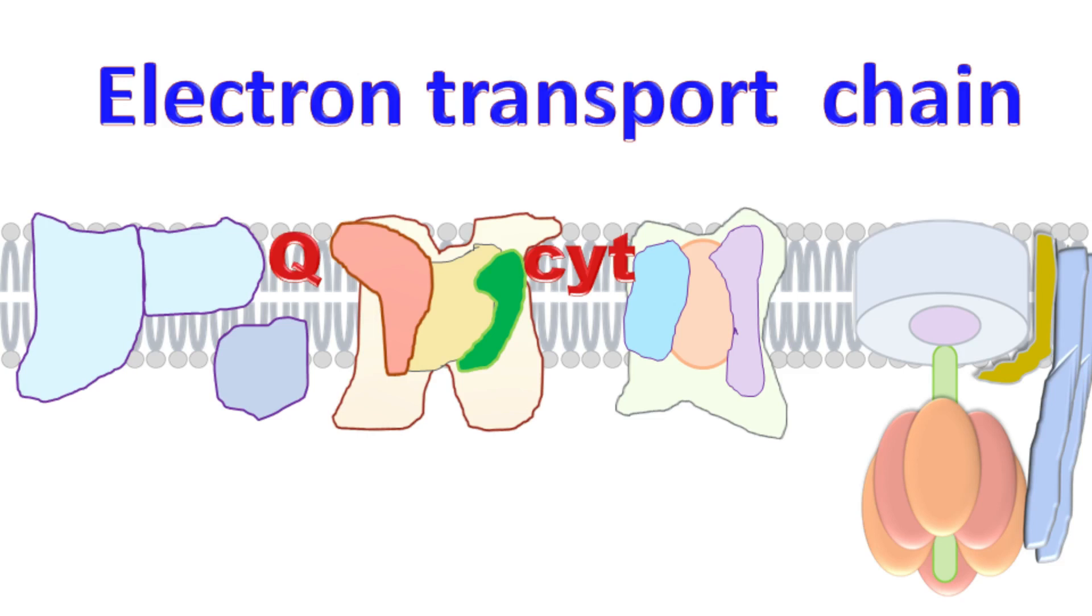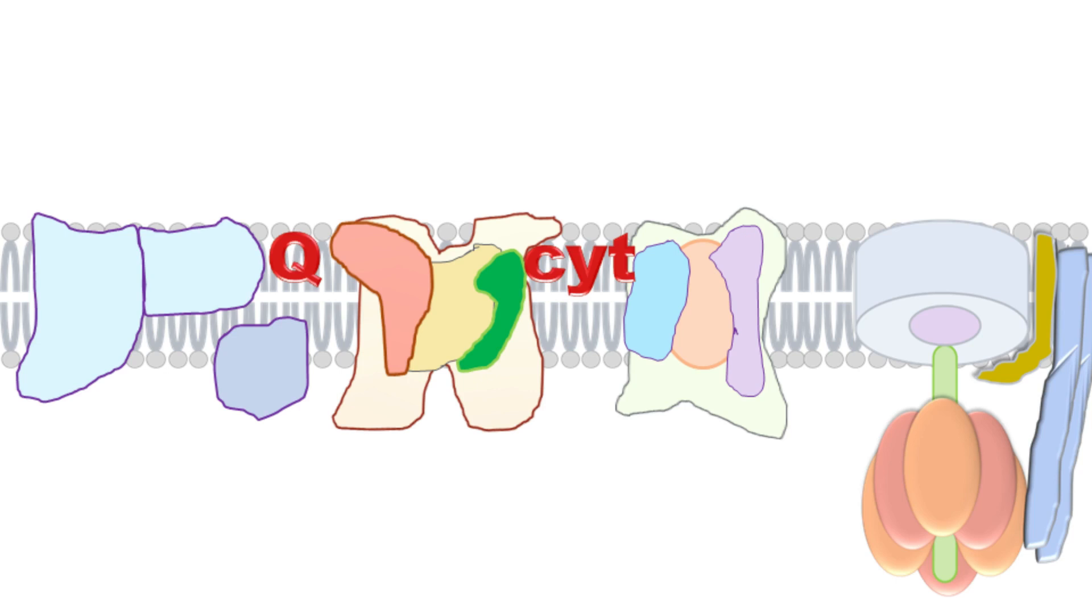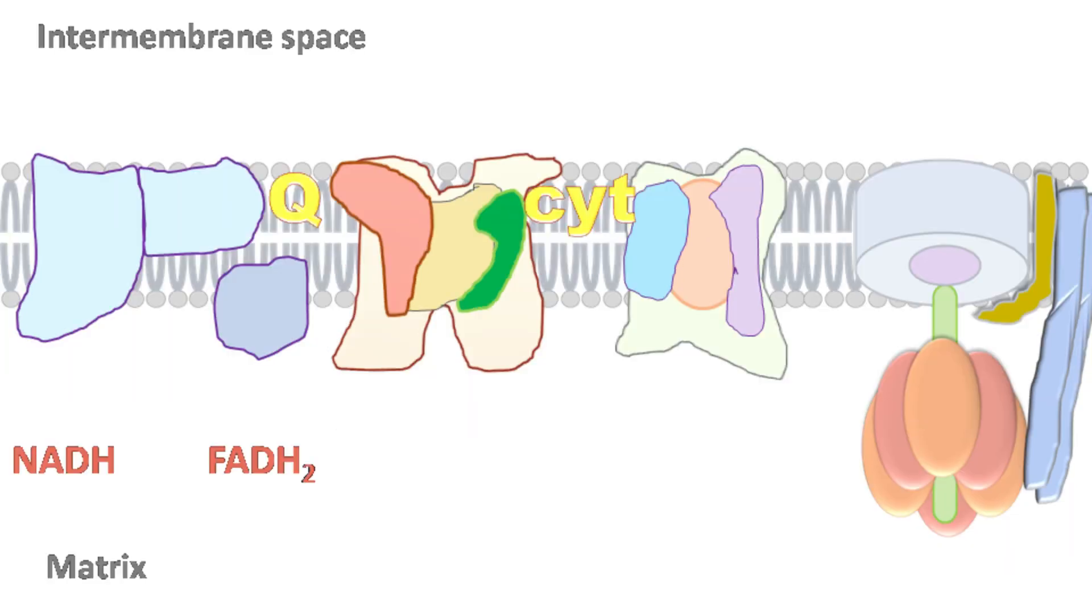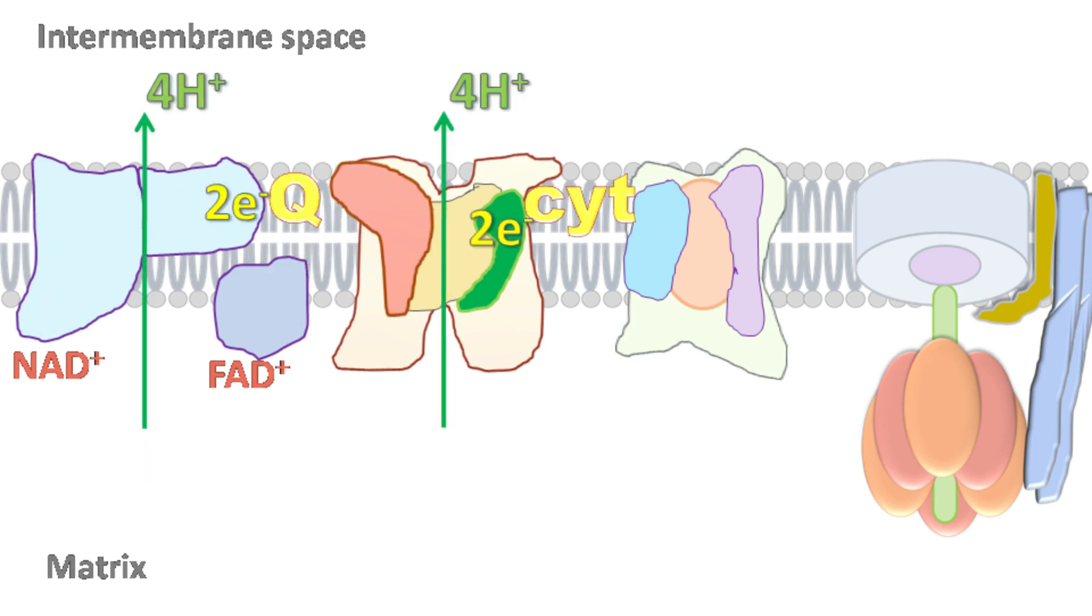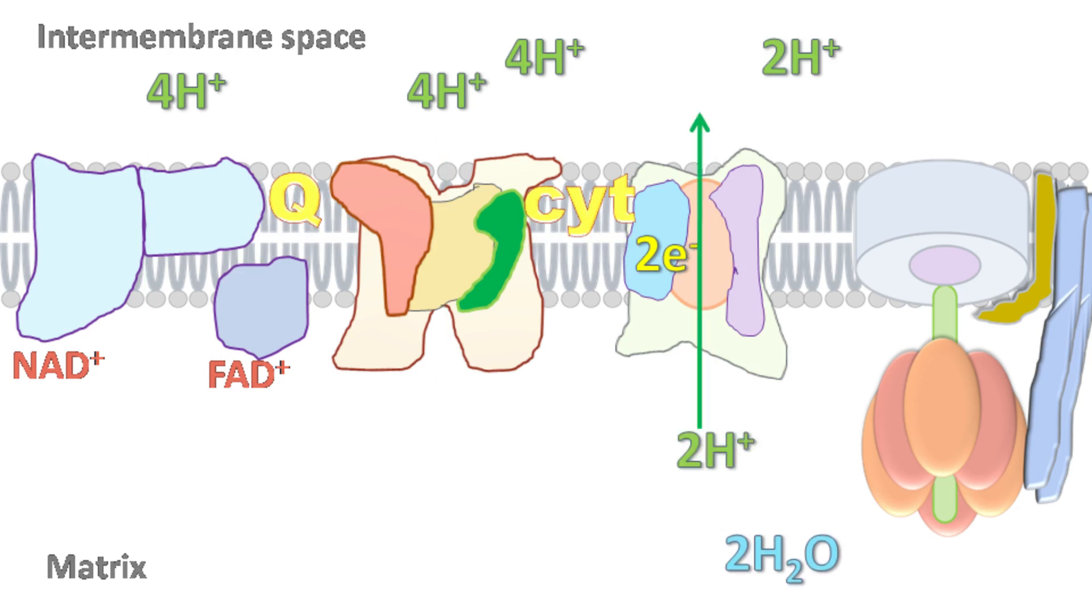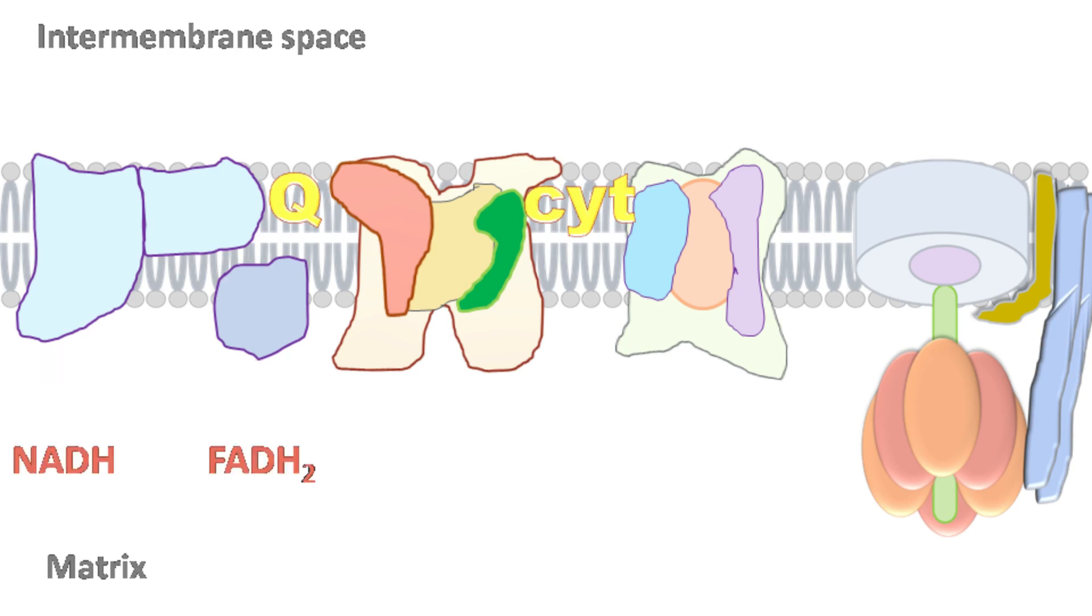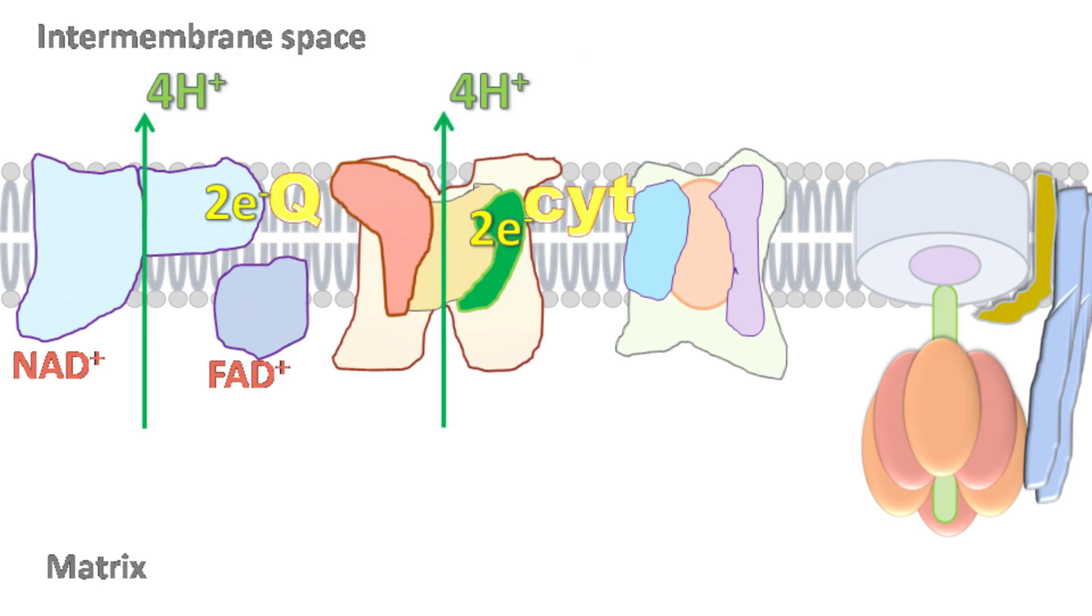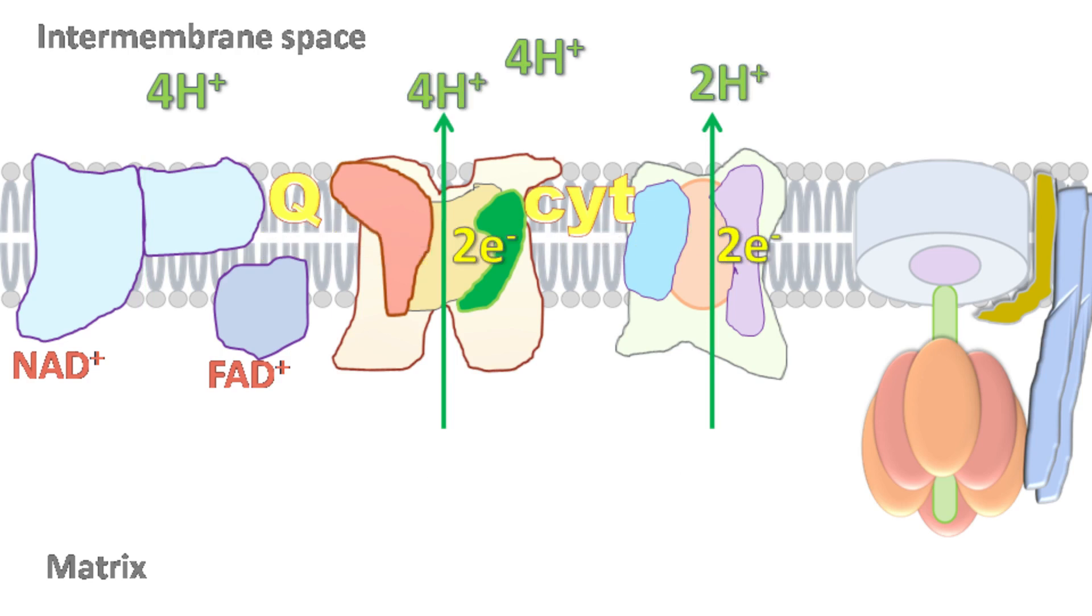Hey everyone, quick biochemistry basics here. Let's talk about electron transport chain. The phenomenon in which electrons donated by electron donors like NADH and FADH2 are transferred from one electron carrier to another and finally to acceptors like oxygen is called electron transport chain. During this process, the H+ ions are transferred across the mitochondrial membrane.